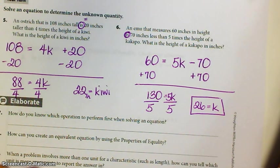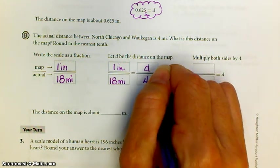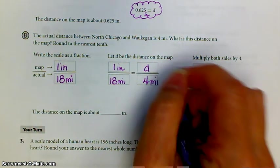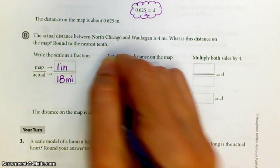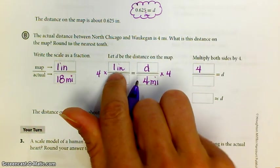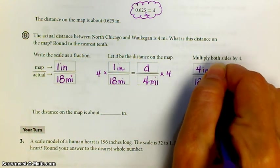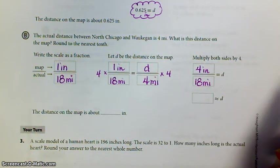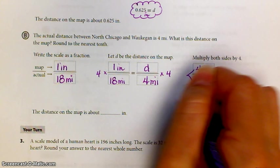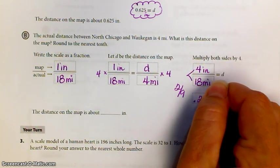So, 1 inch over 18 miles is equal to D inches on the map over 4 miles of actual land. Multiply both sides by 4. 4 times the 1 inch. You have 4 inches divided by 18 miles. 4 divided by 18, that's the same, you can reduce that. That's 2 9ths. And 2 9ths is 0.22 repeating.